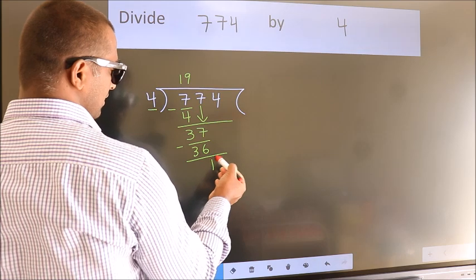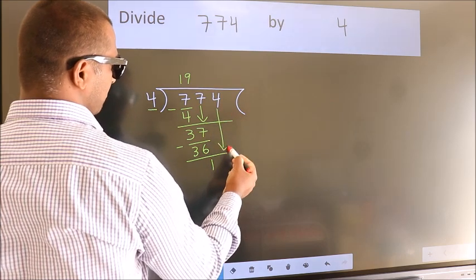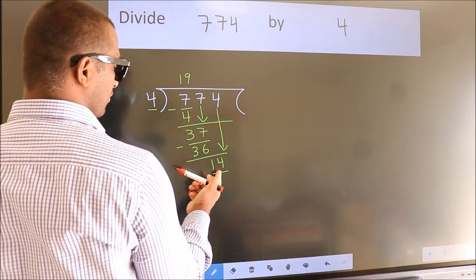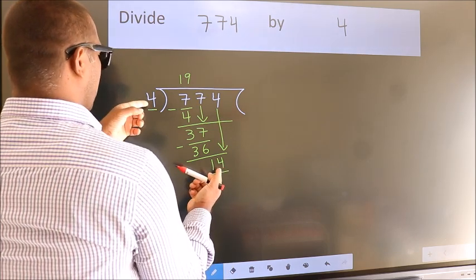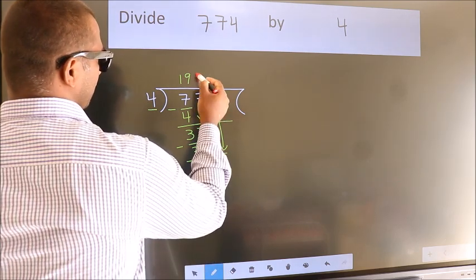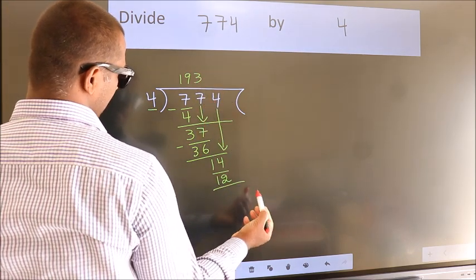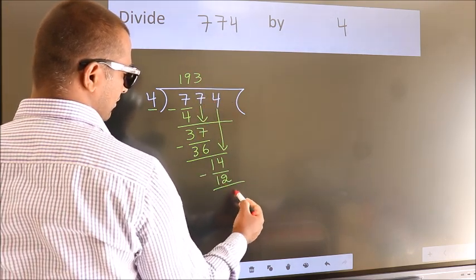After this, bring down the beside number. So 4 down, giving us 14. A number close to 14 in the 4 table is 4 threes, which is 12. Now we subtract and get 2.